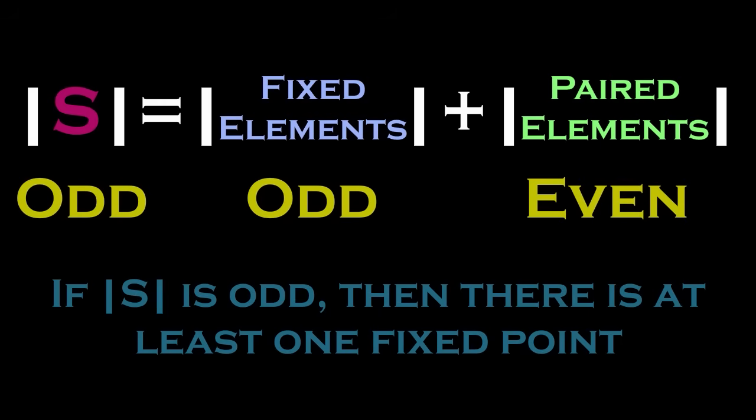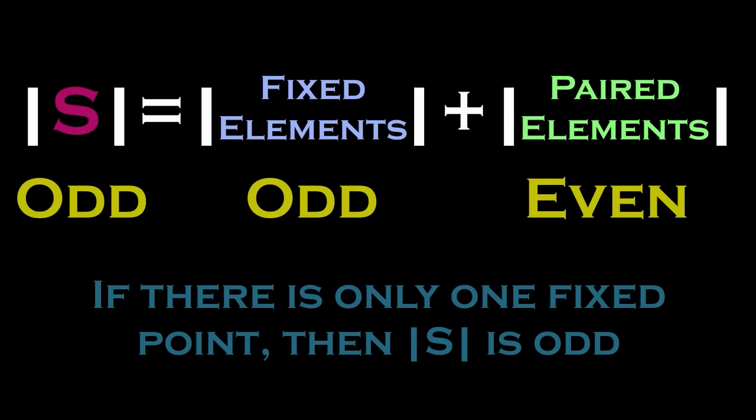And you can actually look at this equation in reverse. If there is exactly one fixed point, then s is odd. Again, I know that this feels a little bit disjointed, but keep this idea of involutions in the back of your mind.